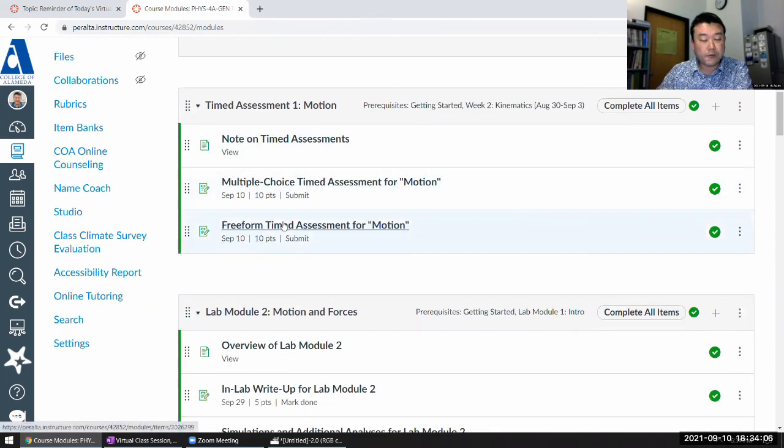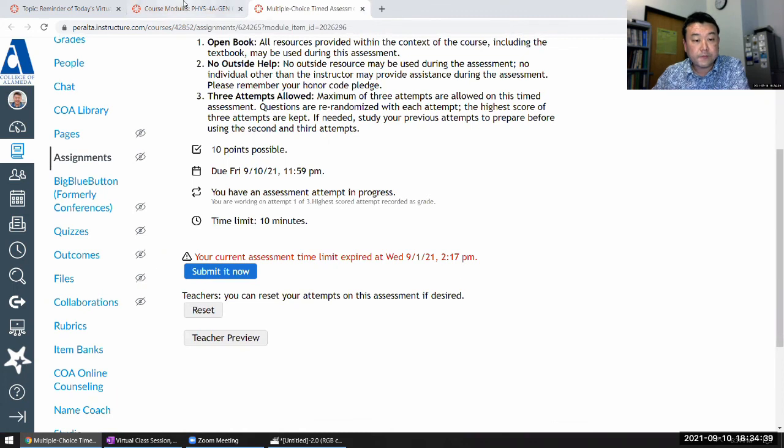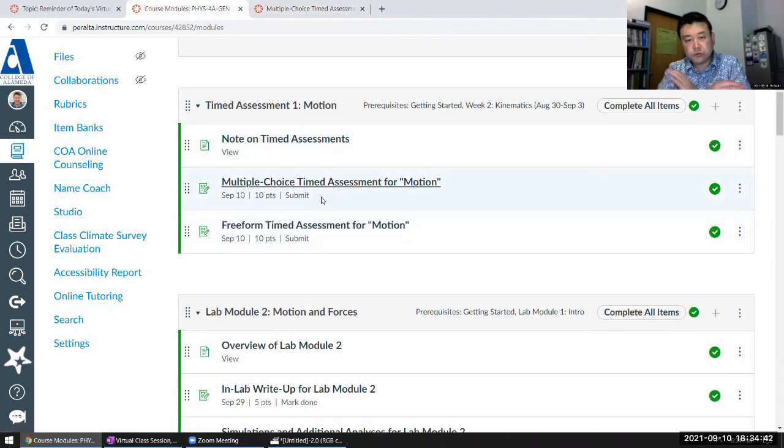Sometimes people do better on multiple choice, just because they're good test-takers. Sometimes I'll get some answers right, even though I don't understand it, because I know how to use process of elimination and all that. But on the other hand, people who just don't know anything about kinematics will have a hard time with multiple choice. So multiple choice gives you one snapshot of where you stand, and free-form gives you the other snapshot. The two are different types. It takes a different kind of reasoning process, problem-solving skills to do well on both of them, so that's really what I'm looking for.